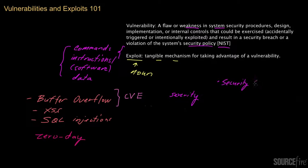Some vulnerabilities have quite a significant security impact. For example, if successfully exploited, they might allow the attacker to get full carte blanche access to the system, where they can then wreak havoc and do really whatever they want. Other vulnerabilities might be less severe — for example, allowing an attacker to slow the system down or cause it to crash.